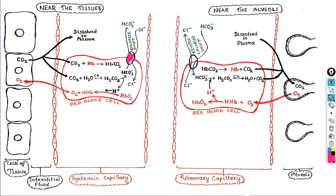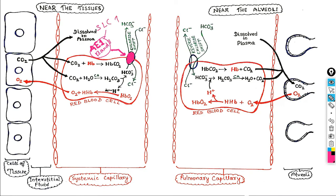To facilitate this, there is a protein present on the membrane of the RBC that helps take bicarbonate ions out. This protein is known as Anion Exchanger 1 protein, also called Band 3 protein. It is encoded by a gene called SLC4A1 present in the human genome. The function of this protein is to transport bicarbonate ion out and in exchange bring in a negatively charged chloride ion.